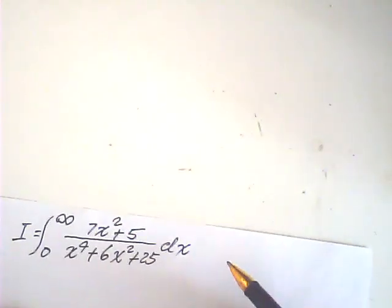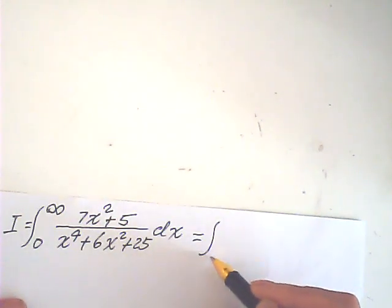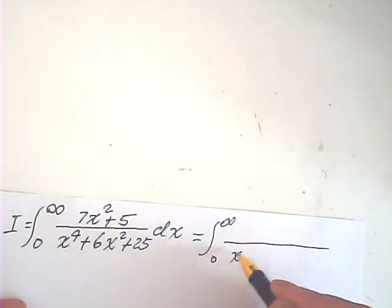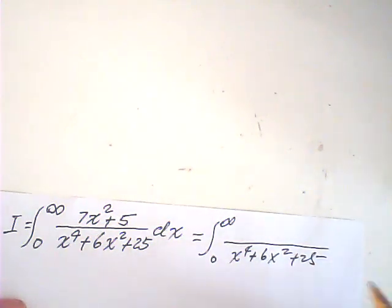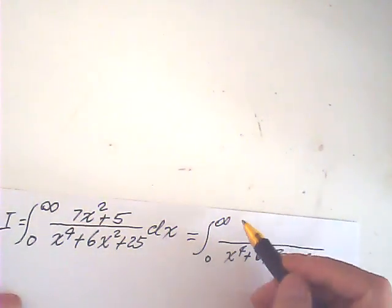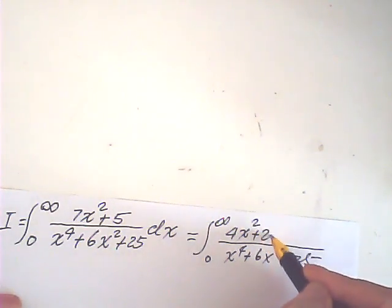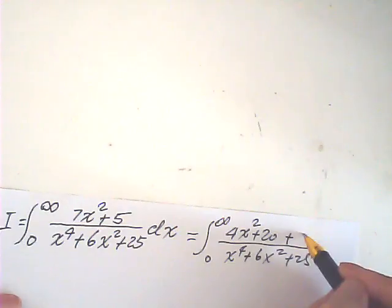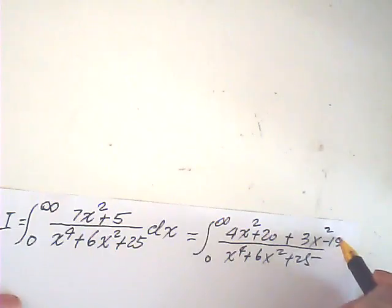Okay, now I do this one by first rewriting the numerator. This is the denominator. The numerator, I write this way: 4x squared plus 20 plus 3x squared minus 15, dx.